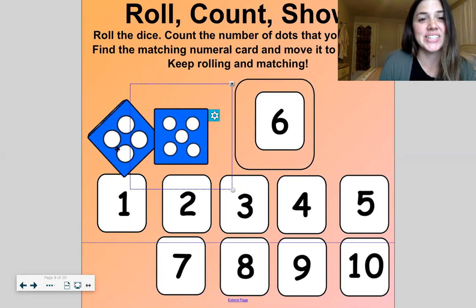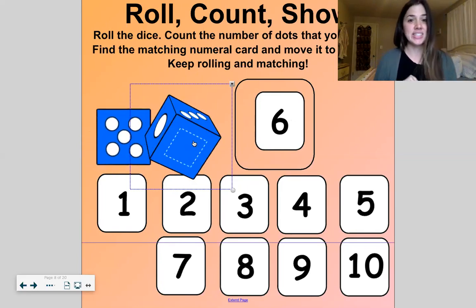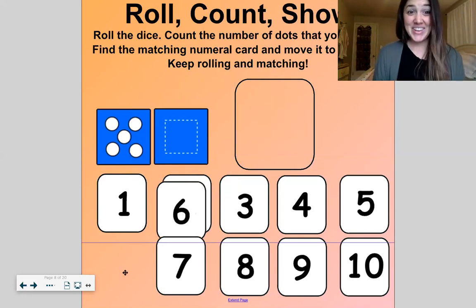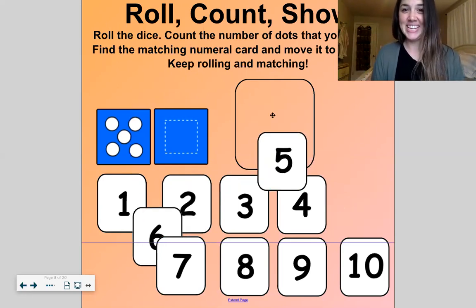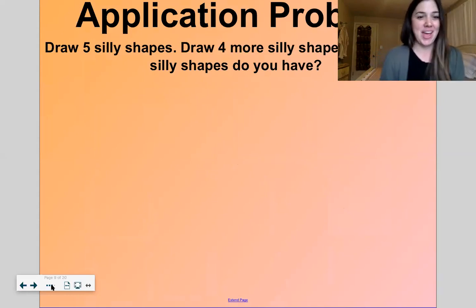Good, all right. Let's do this one more time. Five and zero, five and zero is five. I'm still five, that was a funny one. I wasn't expecting to get that. Okay, let's move on to our application problem.